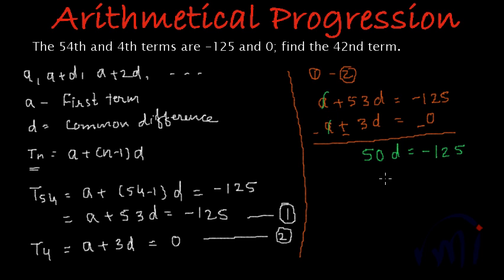And from here we will get d is equal to -125 divided by 50. And this will give us d is equal to -25 divided by 10 will give us -2.5.